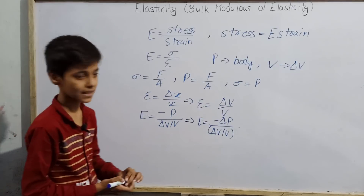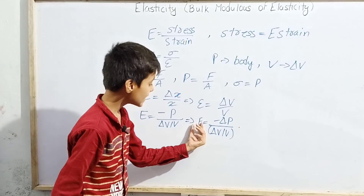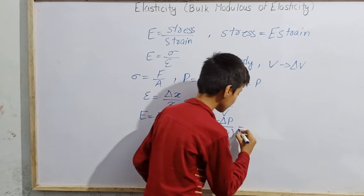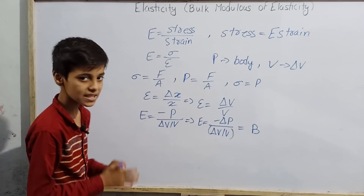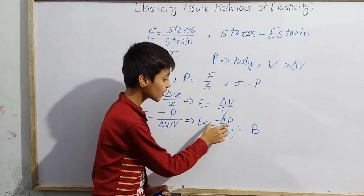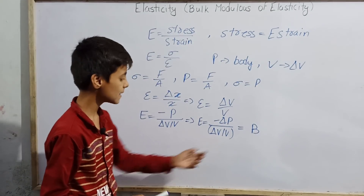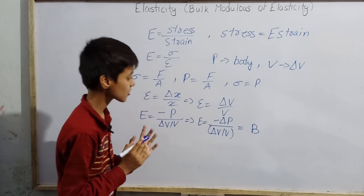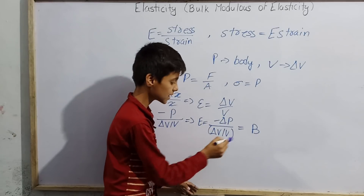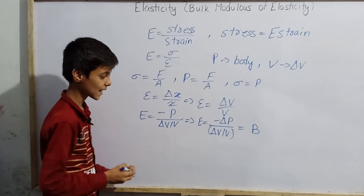Finally, what we get is E equals minus delta P divided by (delta V / V). Any modulus of elasticity of this form is the bulk modulus of elasticity. So we can say that bulk modulus of elasticity B is the modulus of elasticity of the form minus delta P divided by (delta V / V) — whenever a modulus of elasticity takes this form, we call it bulk modulus of elasticity.